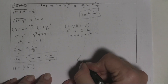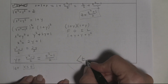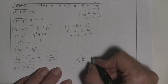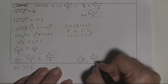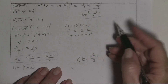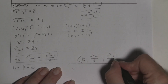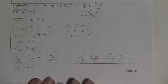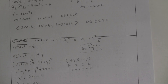So the final answer — one valid parameterization — is r(t) = ⟨t, (t²−1)/2, (t²+1)/2⟩. Answers will vary since there are multiple valid parameterizations. That completes section 13.1.